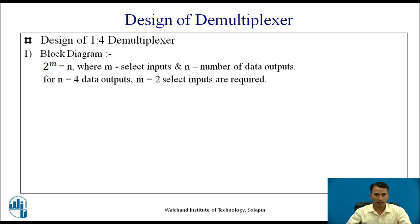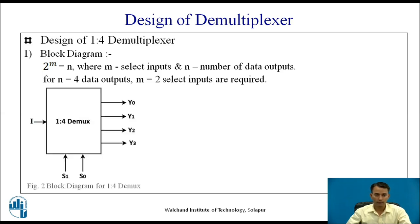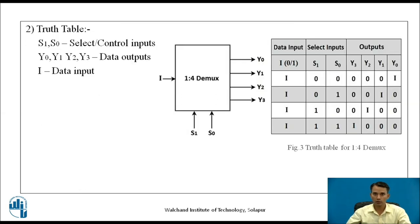In the block diagram, the single input is denoted as i, and the 4 outputs are denoted as Y0, Y1, Y2, Y3, with 2 select inputs denoted as S1 and S0. In the truth table we include all inputs along with outputs. The input i may be 0 or 1, or a stream of 0s and 1s. Based on the S1 and S0 combination, we have 4 outputs.